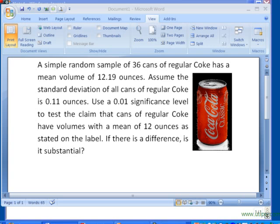And then it says, assume the standard deviation of all cans of regular Coke is 0.11 ounces. Use a 1% significance level to test the claim that cans of regular Coke have volumes with a mean of 12 ounces. In other words, these cans of Coke are filled up. Sometimes there's a little bit more than 12 ounces, sometimes a little bit less.